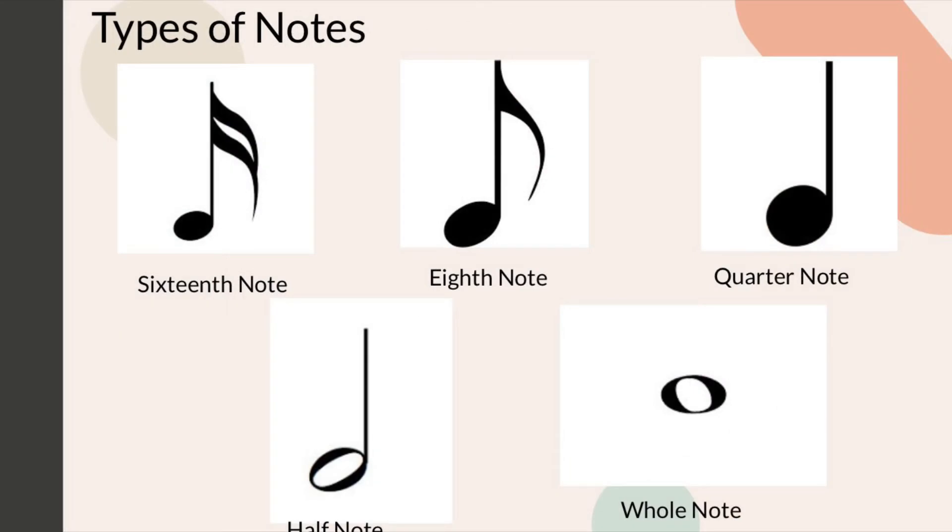So these are the types of notes. So you have a 16th note, an 8th note, a quarter note, a half note, and a whole note. The more of the little flags you see, how the 16th note has those two flags, the more of those little flags, the smaller the note is. So you can get a 16th note, a 32nd note, a 64th note. It'll just keep getting smaller and smaller. And the smaller it gets, the more of those little flags it adds.